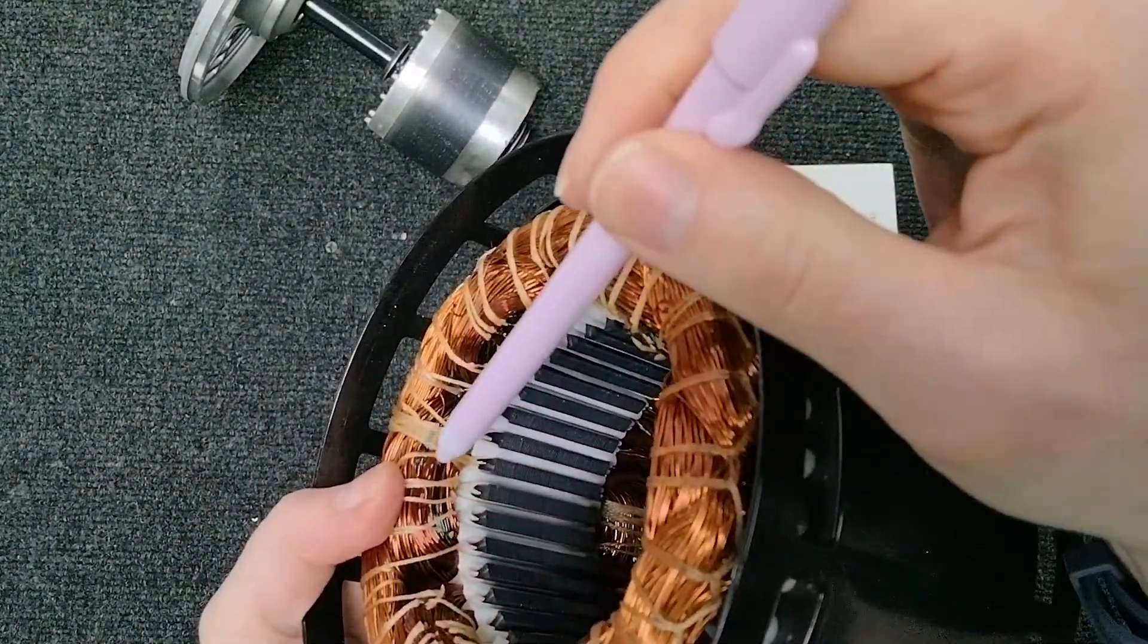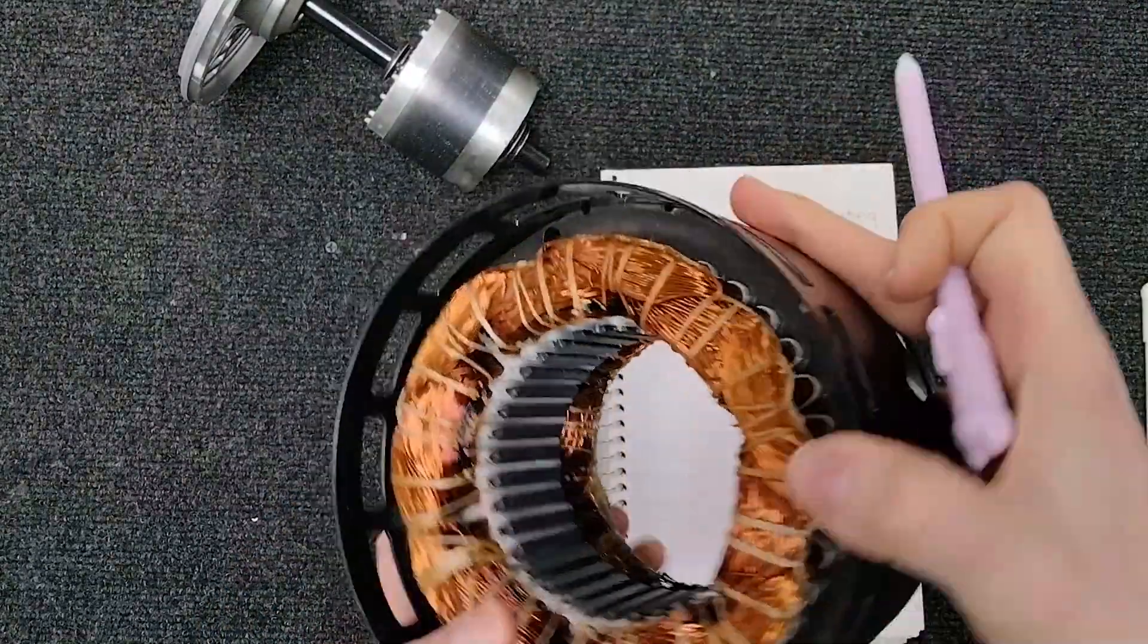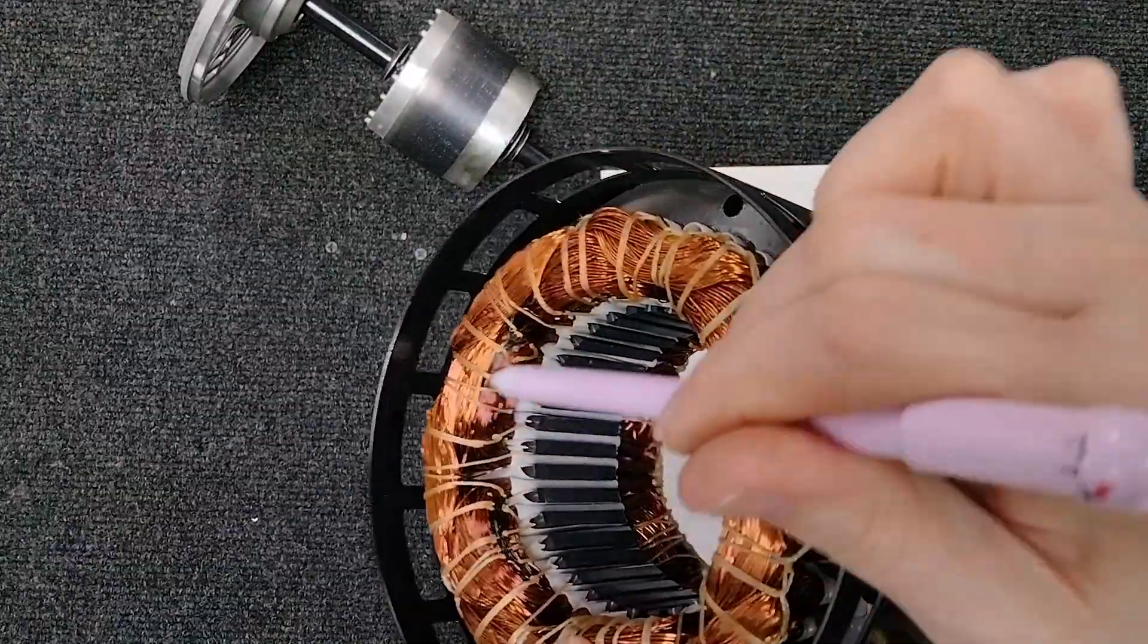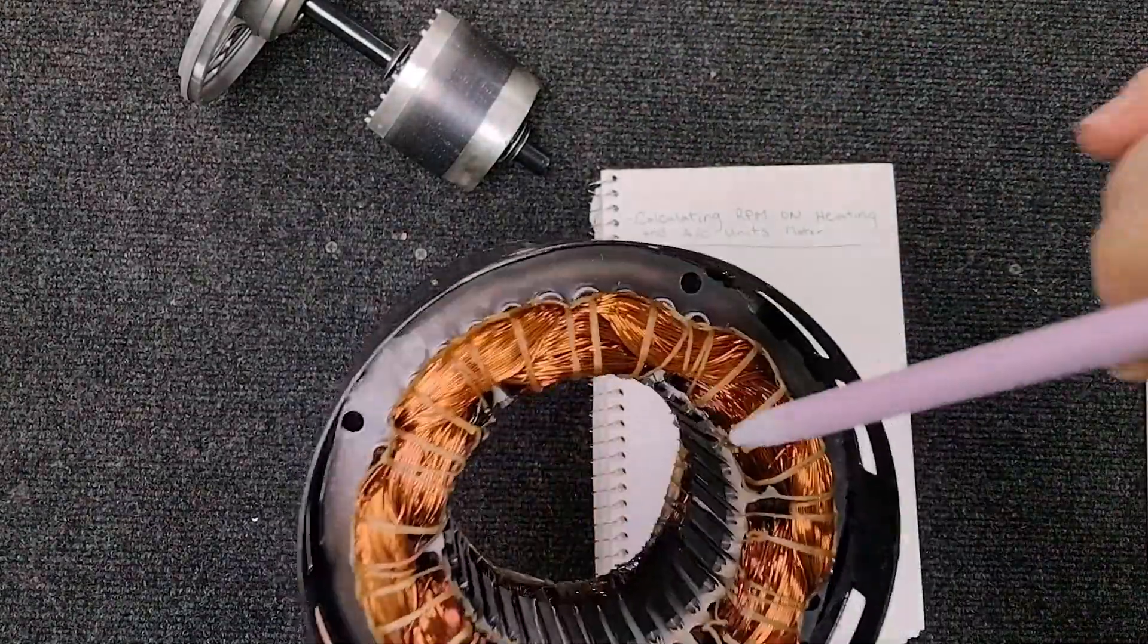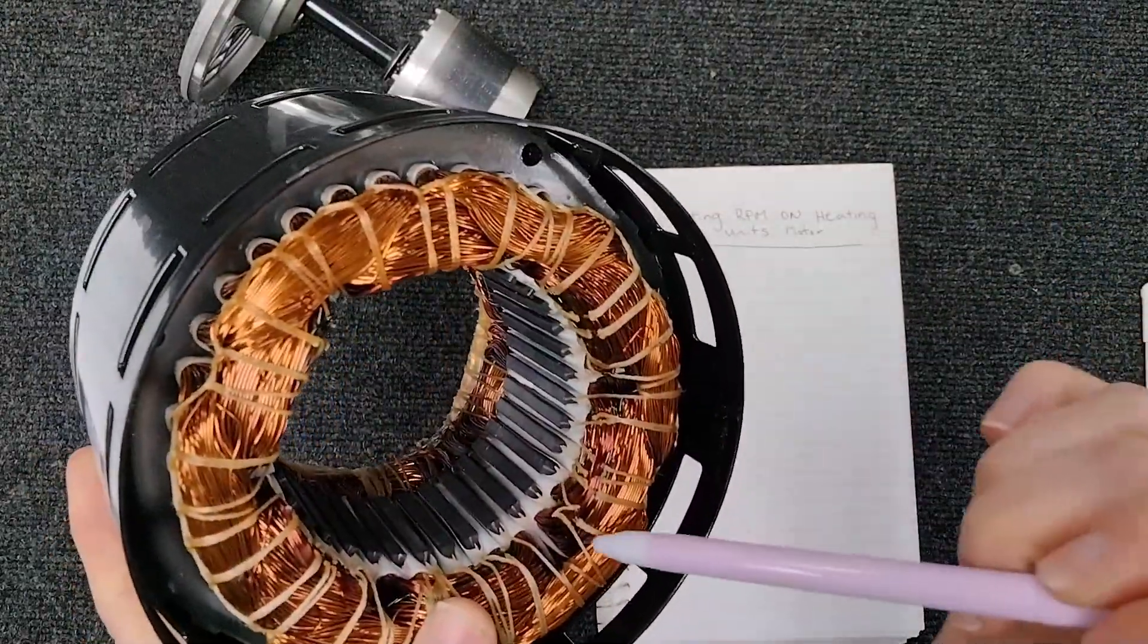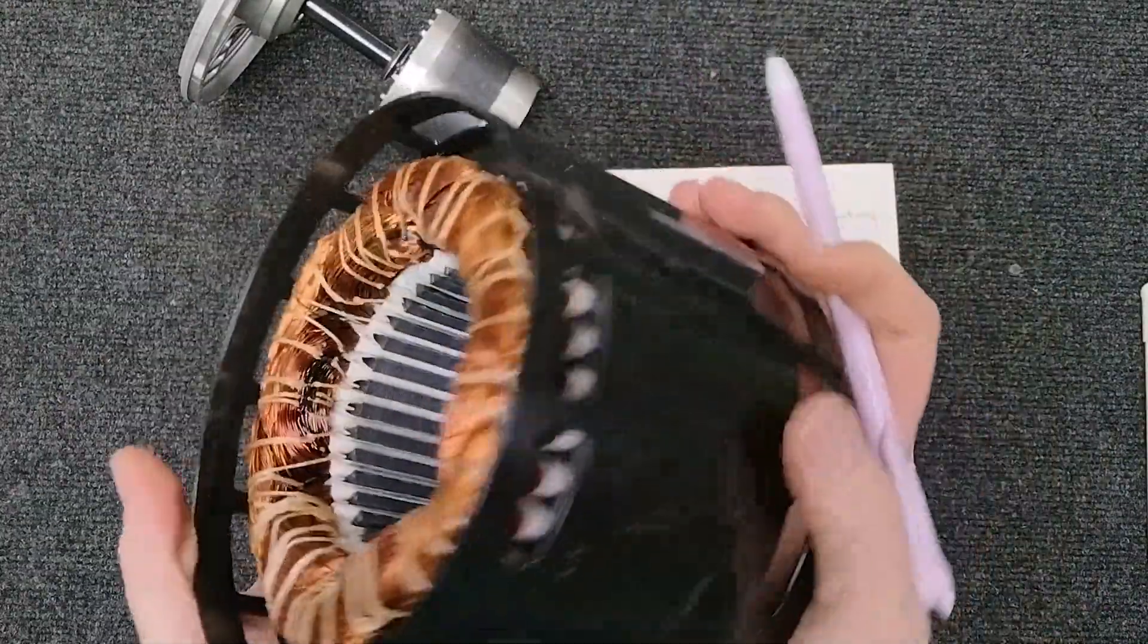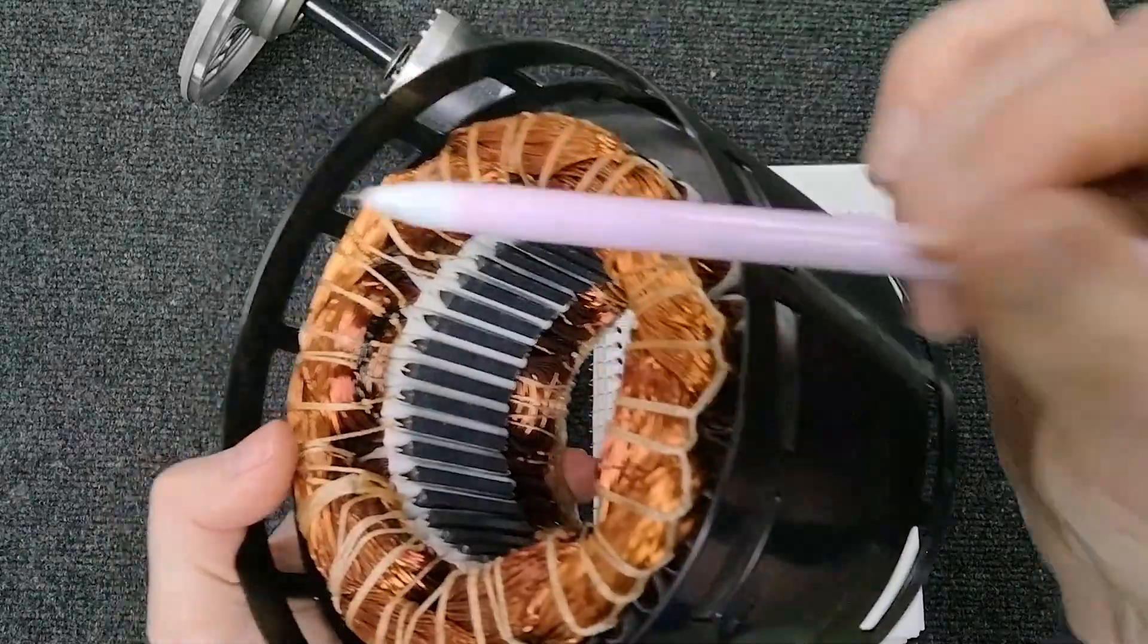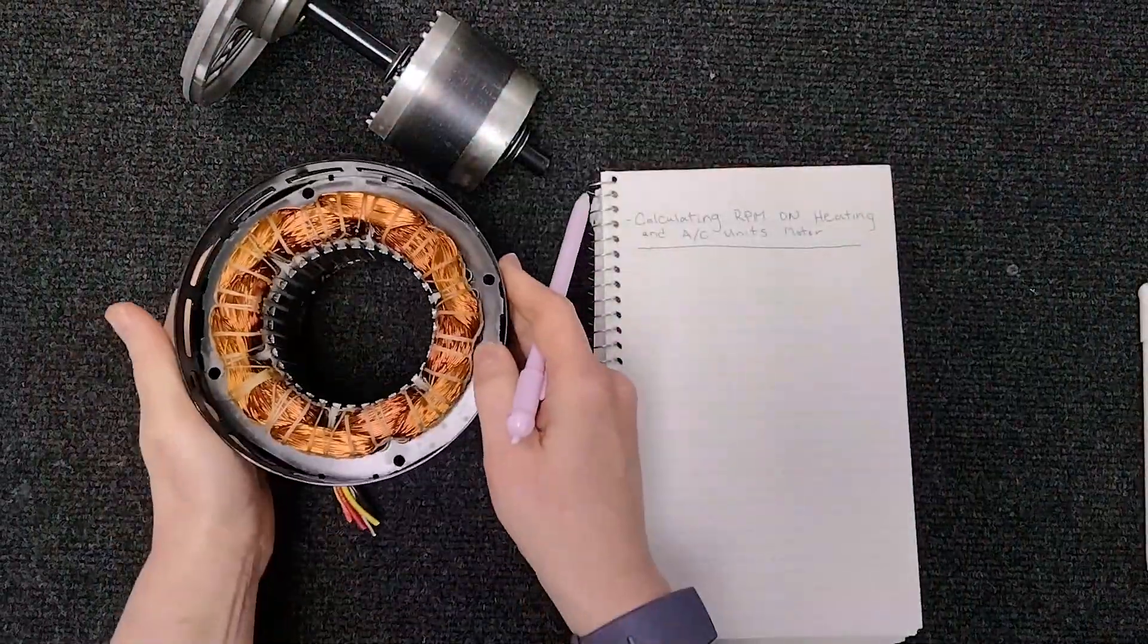So here we have our one, two, three, four, five, and finally six. So we know this is a six pole motor based off of our wired bundles here and our windings.